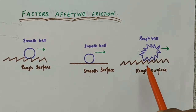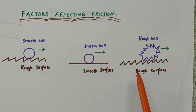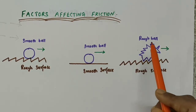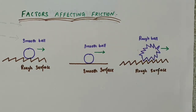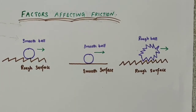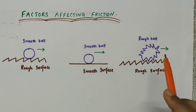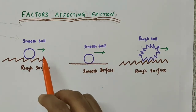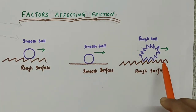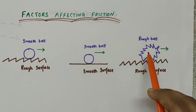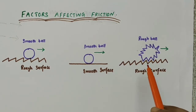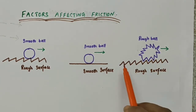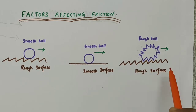Next, consider this third situation in which a ball with a rough surface — a rough ball — moves. They are moving in this direction. So here in the third situation, we have a ball with a rough surface that moves on a rough surface.